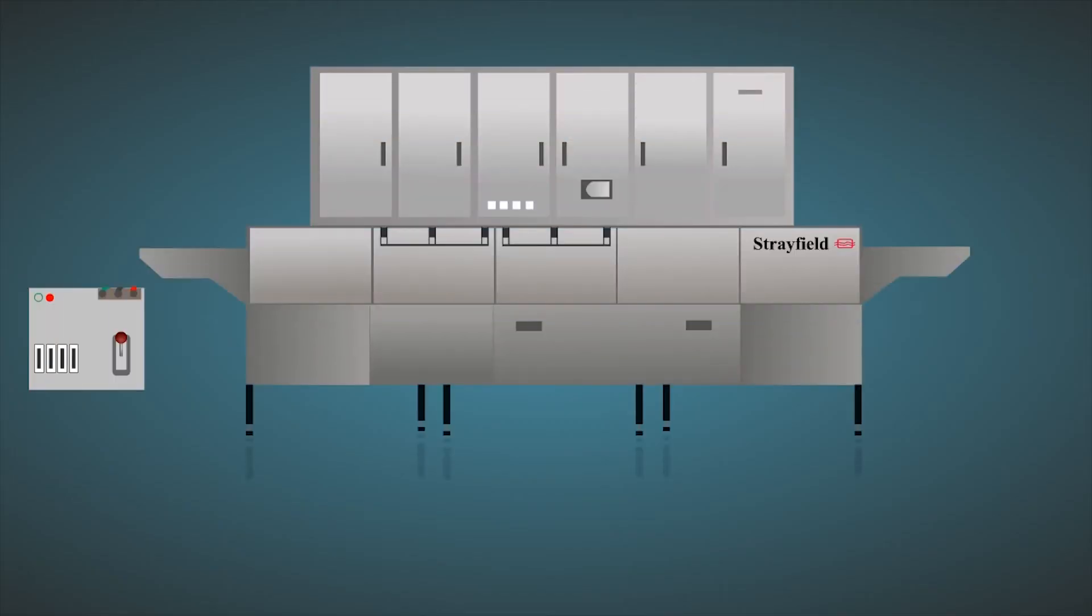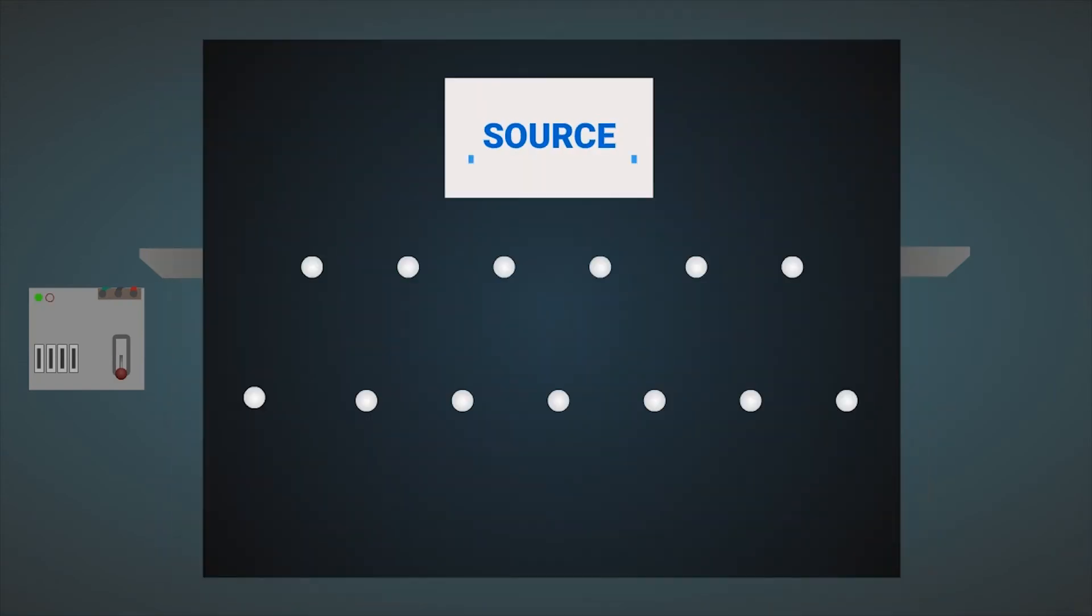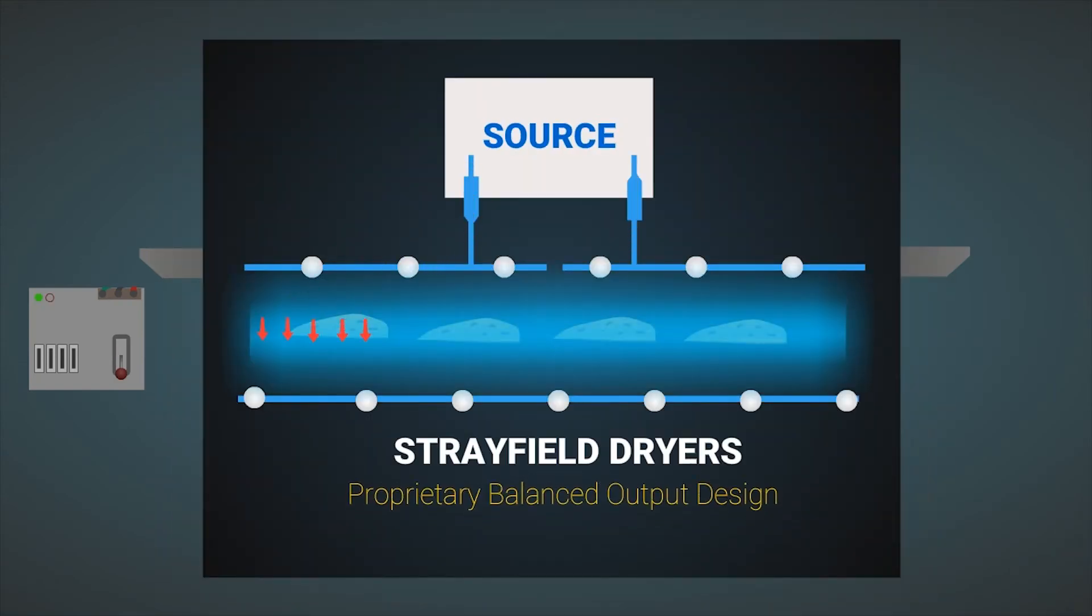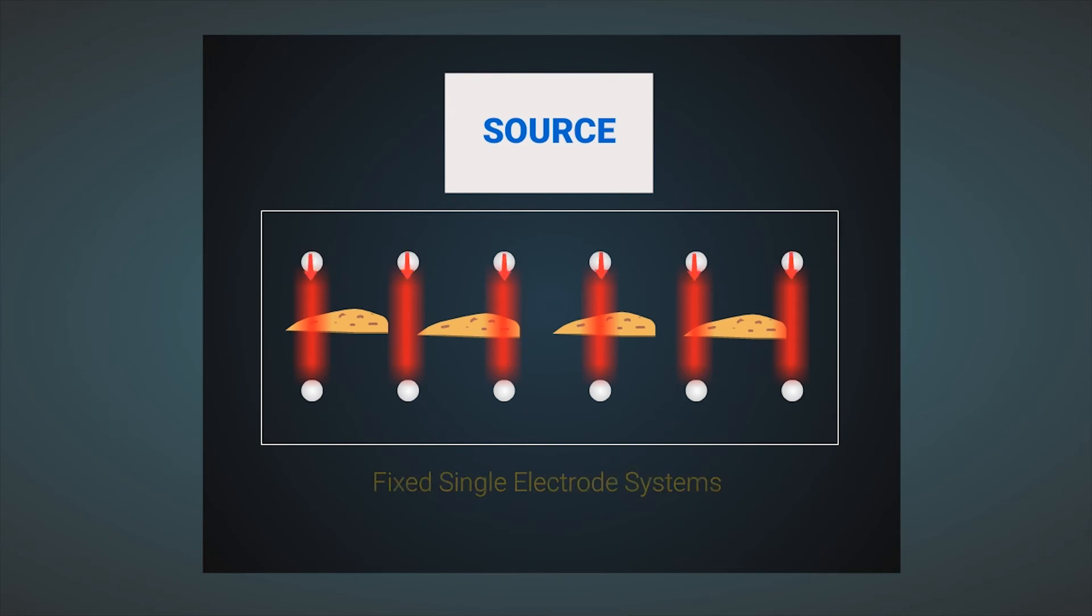Strayfield dryers deliver power using a proprietary balanced output design, which leads to a more efficient means of energy transfer and uniform field distribution. Unlike fixed single electrode systems, which are inferior in these aspects.